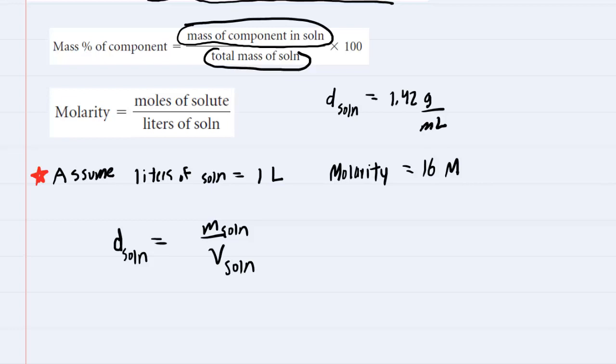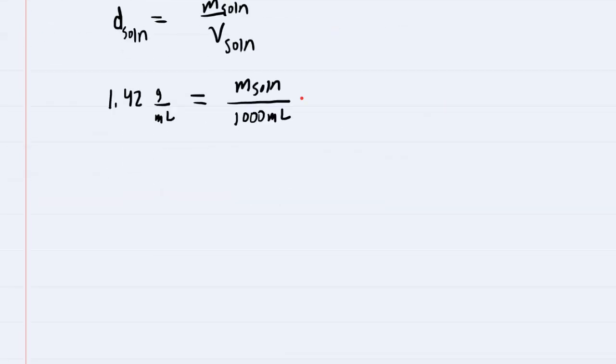We have assumed that the number of liters of solution is 1 liter. It will be useful here to remember that 1 liter is also equivalent to 1,000 milliliters, and the reason for that adjustment is that the density is given in terms of milliliters as well. So we'll plug in the density, 1.42 grams per milliliter equals the mass of the solution divided by 1,000 milliliters. We'll solve for the mass of the solution by multiplying both sides by 1,000 milliliters. They'll cancel out on the right-hand side, and when we multiply these two numbers together, we get 1,420 grams as the mass of our solution.